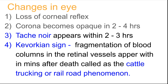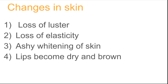Changes in the eye: the eye will lose its corneal reflex action and the cornea becomes opaque within two to four hours. Tache noire appears within two to three hours, and the Caucoin sign is the fragmentation of blood columns in the retinal vessels, appearing within minutes after death — known as the cattle trucking or railroad phenomenon. Changes in skin: the skin will lose luster and elasticity, becoming whitish, and the lips become dry and brown.